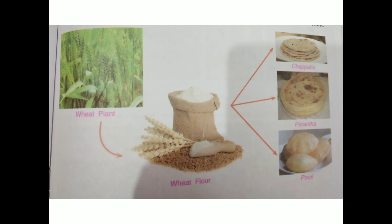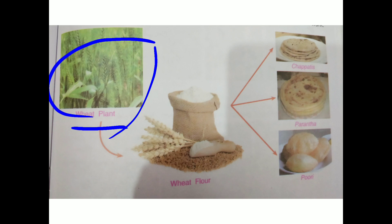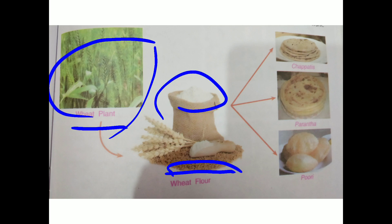As you can see in this diagram, this is the wheat plant. We get the wheat seeds, and after grinding these seeds we get wheat flour. With this flour we can make chapati, paratha and puri. So in this way you get chapati at your home.